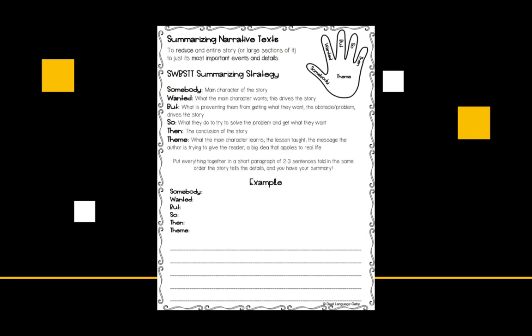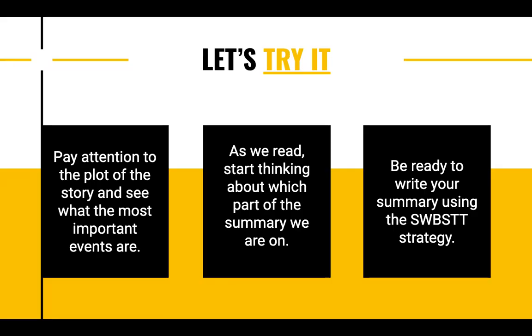All right, so you should have your note taker complete — it should look something like this. We have a part at the bottom for an example, so let's try it. Remember to pay attention to the plot of the story and see what the most important events are, because that's what we're going to be focusing on. As we read, start thinking about which part of the summary we're on — are we on the somebody, wanted, but, so, then, or theme? Be ready to write your own summary using the somebody wanted but so then strategy.